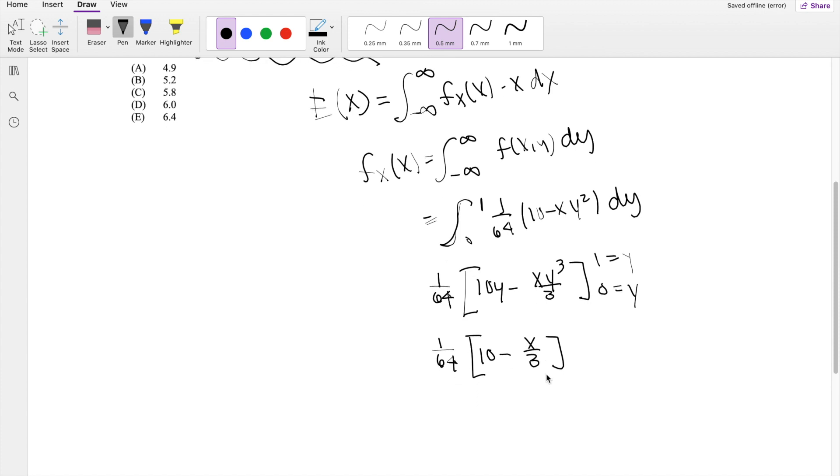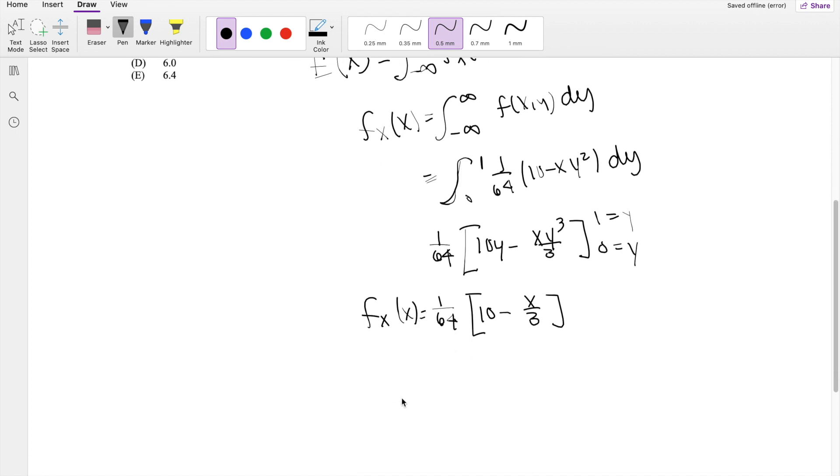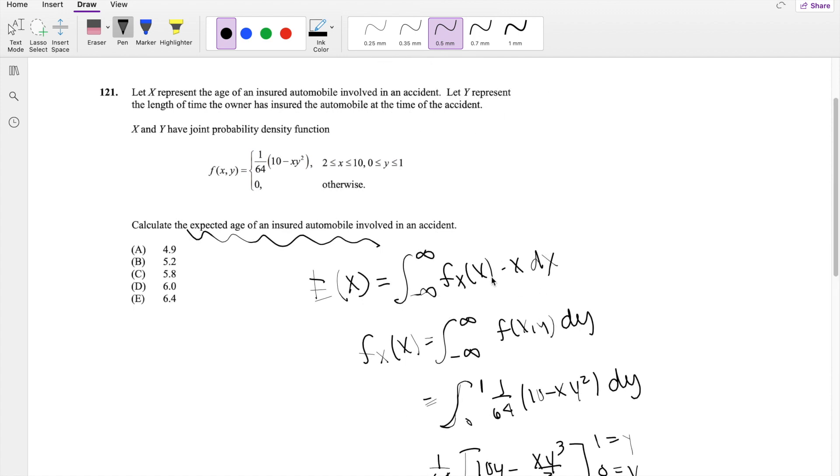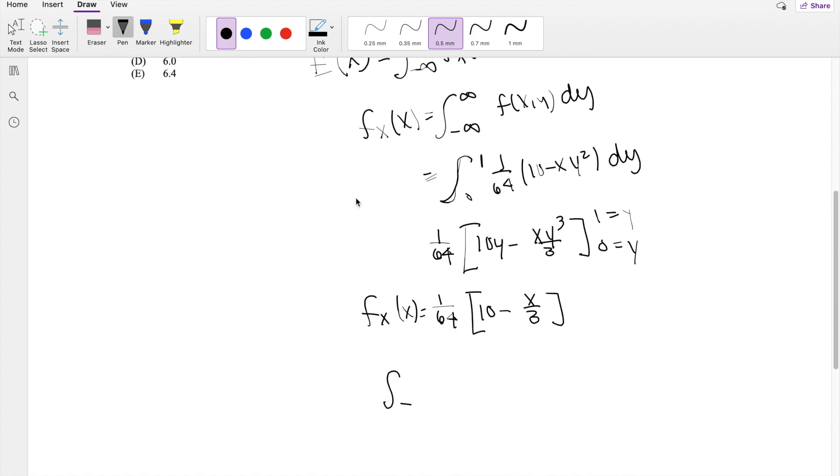Alright, so now we can actually put this f of X, the marginal distribution of X, back into our expected value definition. So X is actually going from 2 to 10. So the integral is from 2 to 10 of 1 over 64, 10 minus X over 3 times X dx.